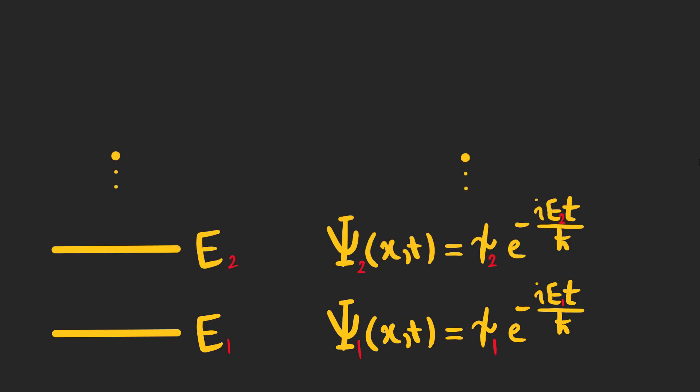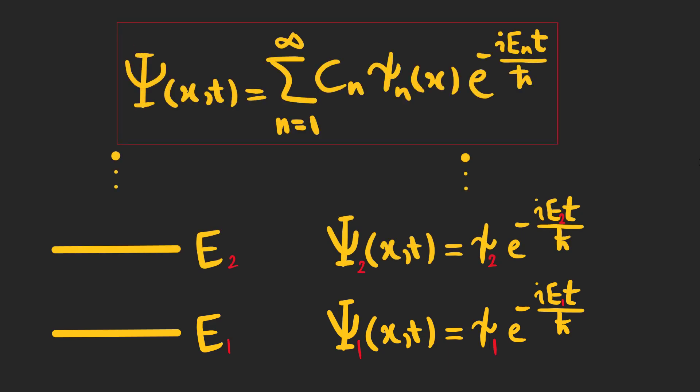For energy level E we have this wave function. But is it the only possibility? This is just one solution. And we might have other possible solutions. So the general solution to the Schrödinger equation is a linear combination of all possible answers.